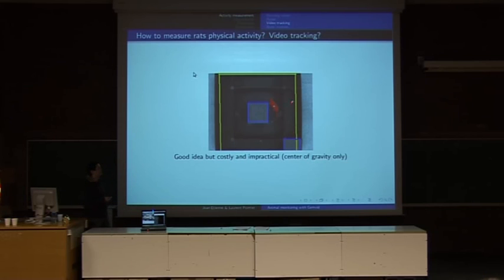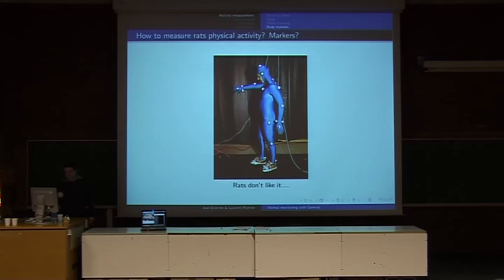The second point, it's impractical because what the software does is it takes the animal, takes the center of gravity only, and then puts some red points all over the animal. So it measures only the center of gravity, so again, it's motor activity and not general activity. A final solution is markers like people do in virtual reality systems. But really, rats don't like these things. They just chew them and it's over.